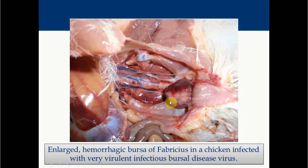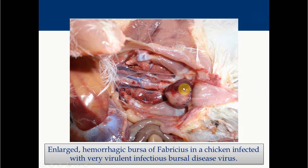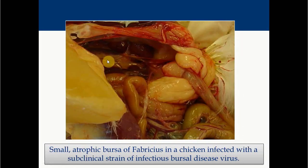Here we can see the gross picture — this is a very enlarged bursa showing hemorrhages, which is a very characteristic and pathognomonic lesion of IBD. We must remember that the bursa enlarges in acute conditions only in the initial three to five days, showing edema, hemorrhage, and necrosis. In subclinical strains, there will not be much hemorrhage and edema, but due to lysis of precursor B lymphocytes only atrophy will be found. After three to five days, most edematous fluid is reabsorbed and an atrophic bursa will be found.